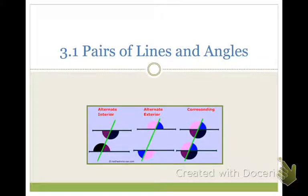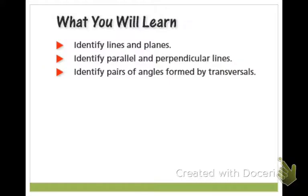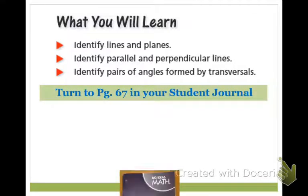We're beginning section 3.1, pairs of lines and angles. Today we're going to do pairs of lines, and tomorrow we'll do pairs of angles. Go ahead and flip to the front of your notes. We're going to learn to identify lines and planes — which you already know how to do — identify parallel and perpendicular lines, and then tomorrow identify pairs of angles formed by a transversal.